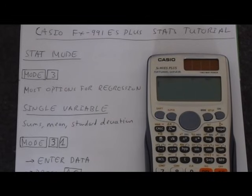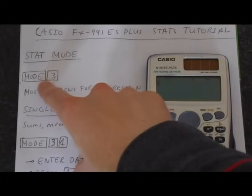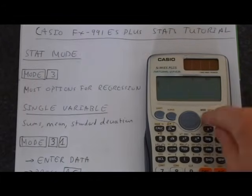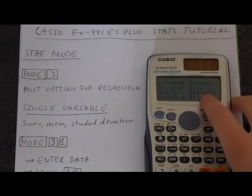In this video, I'm going to show you how to work the statistics functions on your Casio FX991ES Plus calculator. Let's start by getting into the statistics mode. You press mode and then 3, so mode 3, and we get this menu here.